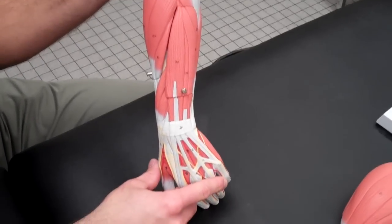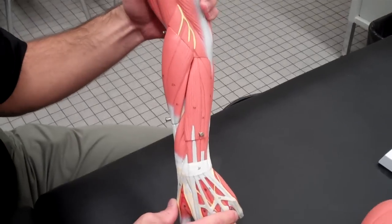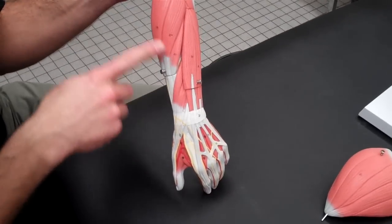All right, so now we're going to cover the muscles of the forearm and elbow. We'll start here on the thumb side, working our way up.